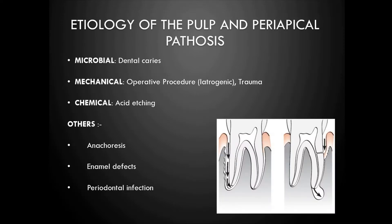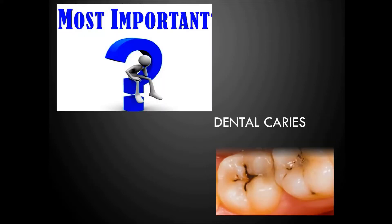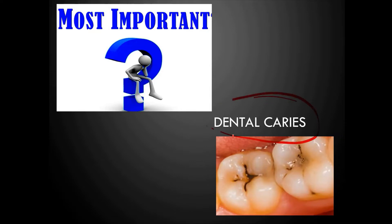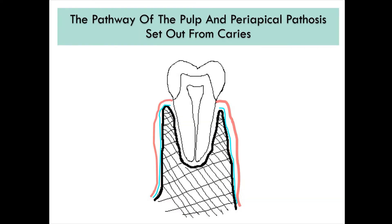The etiology of pulp and periapical pathosis includes dental caries, mechanical causes like iatrogenic operative procedures and trauma, chemical causes like acid etching, and other causes like anachoresis, enamel defects, or periodontal infection. However, the most common cause we encounter is dental caries, which is the most common cause of pulpal and periapical pathology.